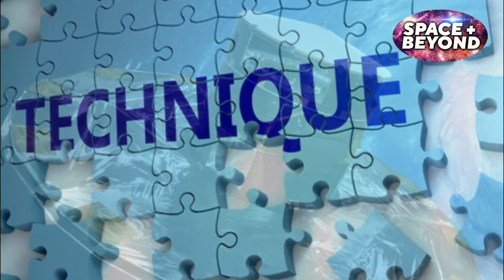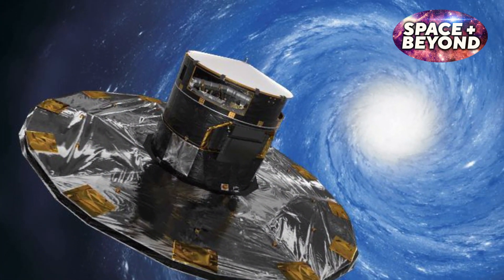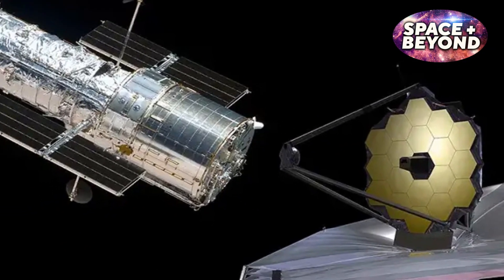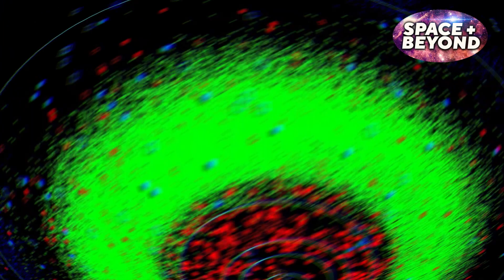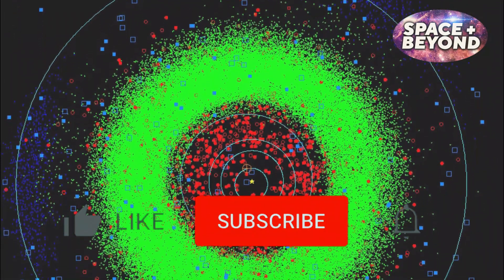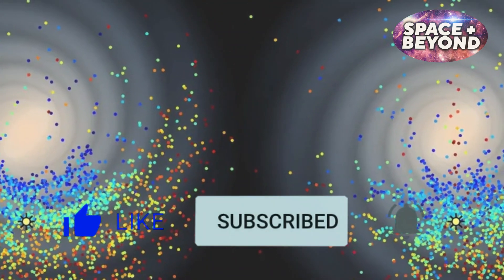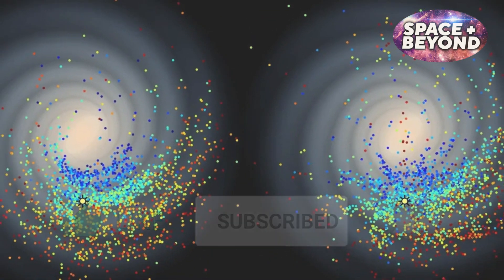While not as publicized as other telescopes such as the Hubble Space Telescope or James Webb Space Telescope, Gaia has made significant contributions to our knowledge of the Milky Way. Through its precise positional measurements and distance calculations for over one billion stars, it's enabled us to create a 3D map with unparalleled accuracy.